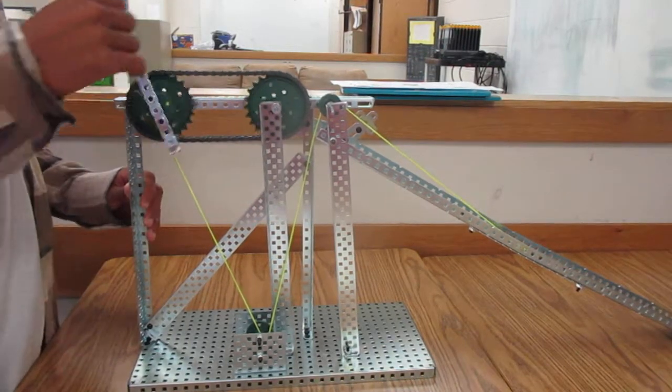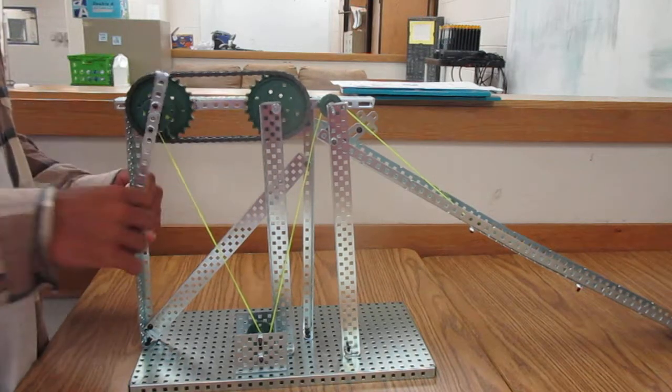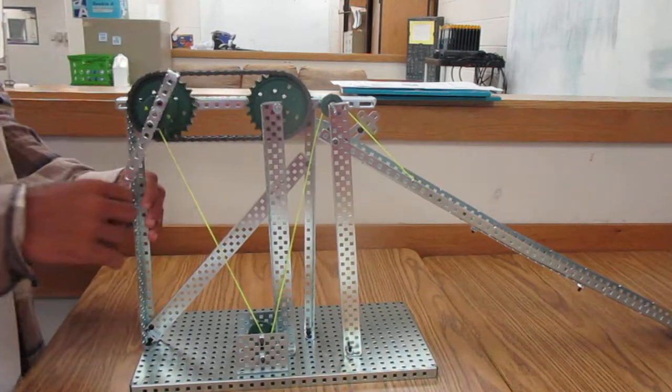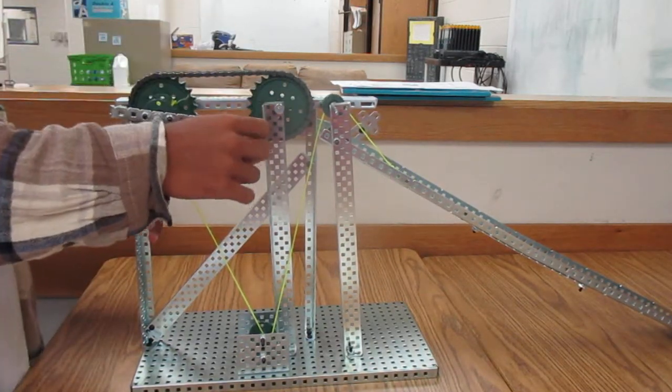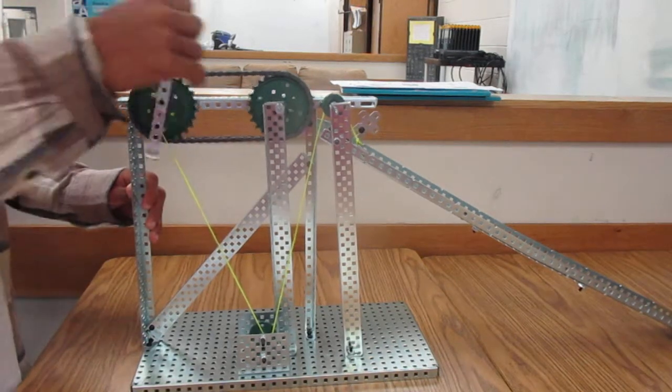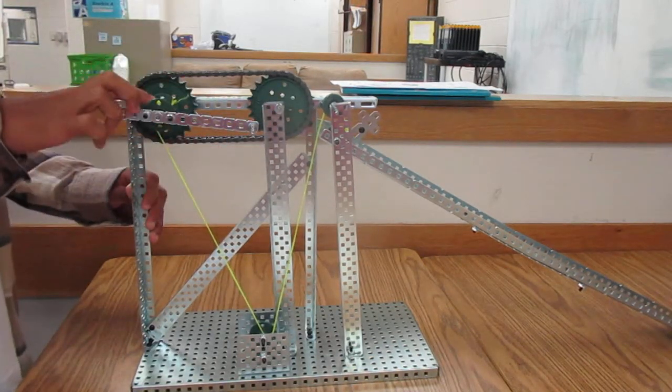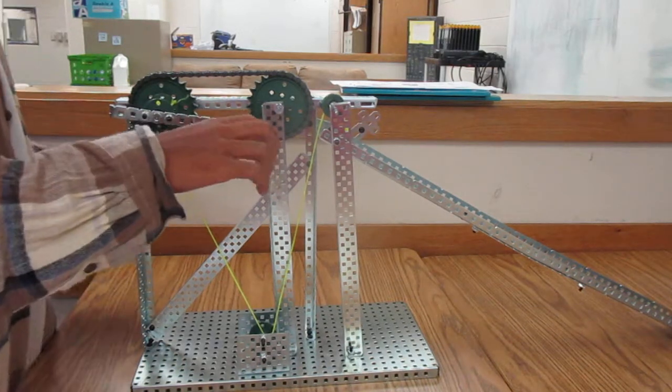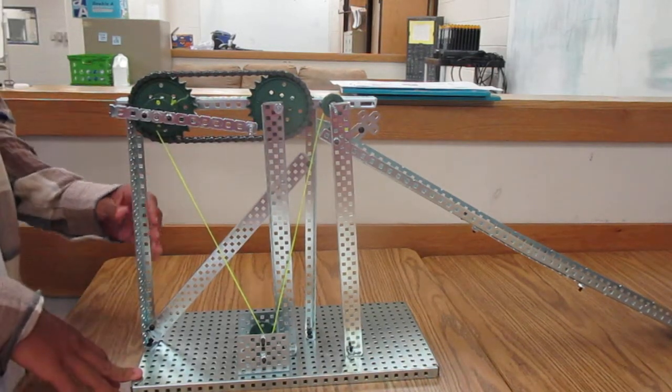Besides the incline plane, other parts of our machine include a class one lever, a winch pulley system, and a chain sprocket.